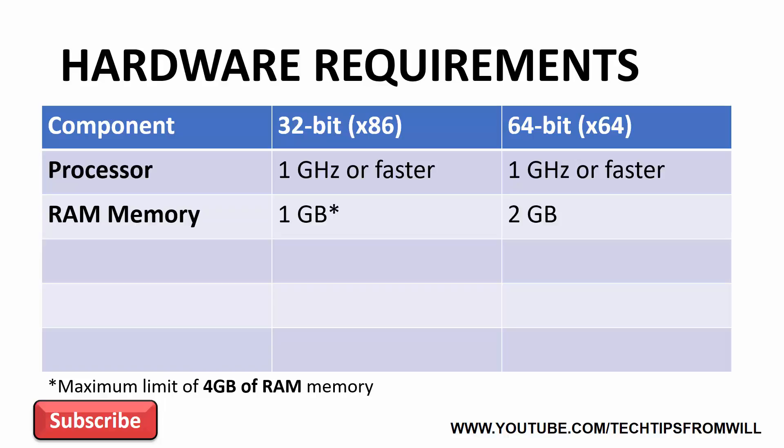Considering this limitation, before you install Windows 10, ask yourself the question: do I need more than 4 GB of RAM? If the answer is yes, then you will need to install the 64-bit architecture in order to address this. Regardless of which architecture you choose, try to exceed the minimum RAM requirements where possible. Typically, the more RAM you install, the better. The next requirement to discuss is the disk space requirement.